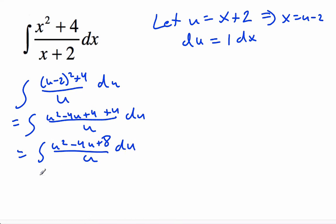So we'll simplify and split this into three integrals, or just a polynomial. We're going to have u and negative 4u divided by u gives you negative 4, and then 8 divided by u, we're going to have an 8u to the power of negative 1.